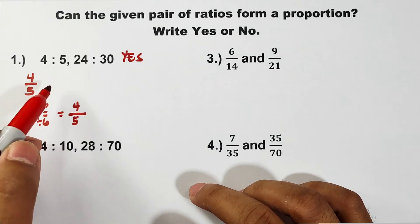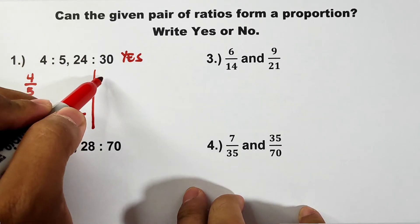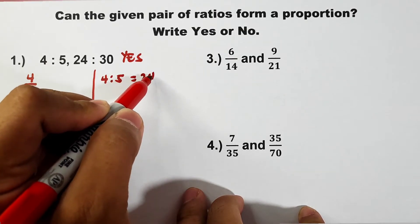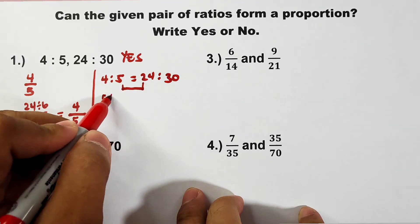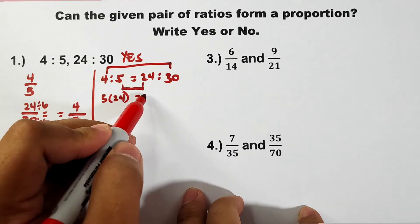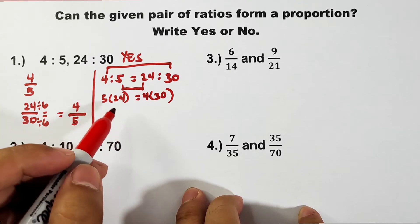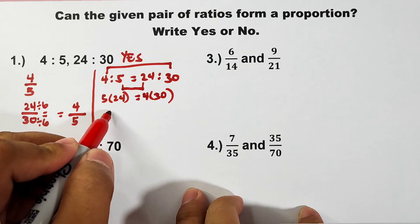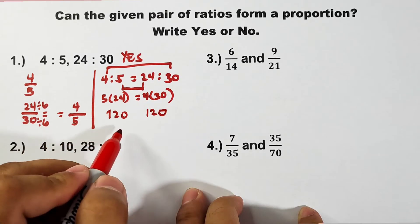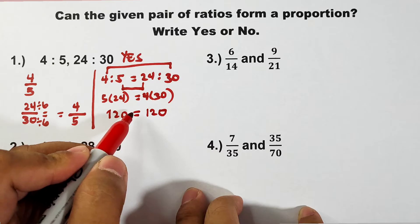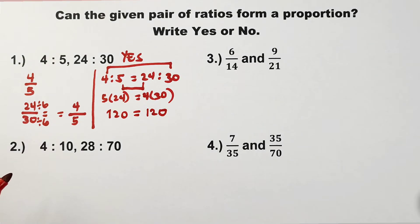Method 2 is to create an equation: 4 is to 5 is equal to 24 is to 30. We multiply the means — 5 times 24 — and the extremes — 4 times 30. If the products are equal, the answer is yes. 5 times 24 equals 120, and 4 times 30 equals 120. Since 120 equals 120, yes, they are forming a proportion.